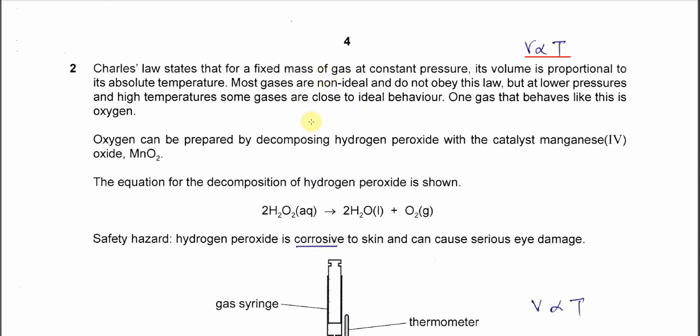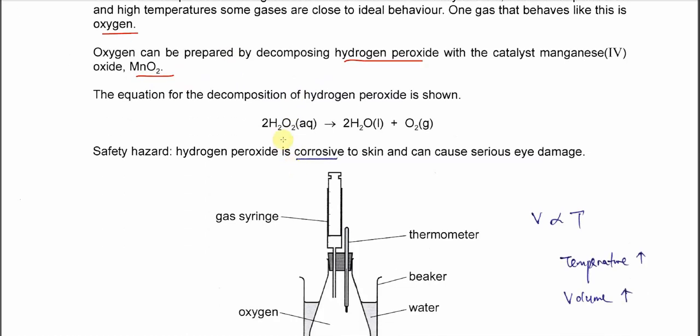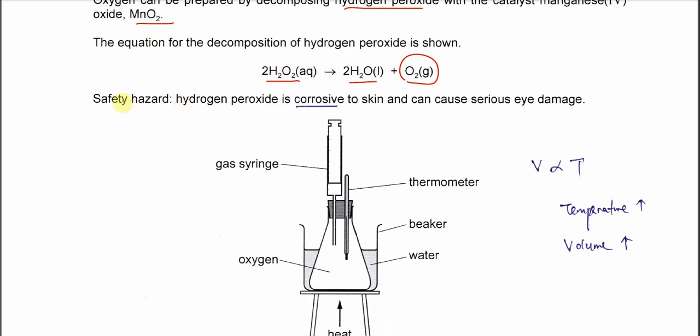In this question, the gas used is oxygen, and this oxygen gas can be prepared from H2O2 with manganese oxide as catalyst. The equation: H2O2 decomposes to form water and oxygen gas. So we can get the oxygen gas from this decomposition. In this part, there is a safety hazard. Whenever they give a safety hazard, be careful because they might ask how to give the precaution. H2O2 is corrosive to skin.